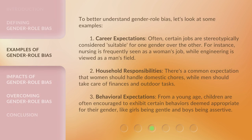To better understand gender role bias, let's look at some examples. 1. Career Expectations: certain jobs are stereotypically considered suitable for one gender over the other — for instance, nursing is frequently seen as a woman's job, while engineering is viewed as a man's field. 2. Household Responsibilities: there's a common expectation that women should handle domestic chores, while men should take care of finances and outdoor tasks. 3. Behavioral Expectations: from a young age, children are often encouraged to exhibit certain behaviors deemed appropriate for their gender, like girls being gentle and boys being assertive.